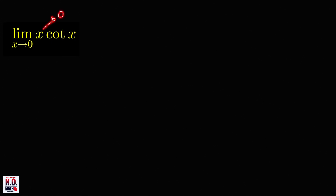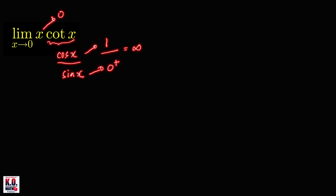Let's look at this first limit here. As x approaches 0, since cotangent x is equal to cosine x over sine x, then as x approaches 0 from the right, this will approach 0 from the right, this will approach 1, so 1 over 0 from the right will approach infinity. That is, when x approaches 0 from the right, cotangent x will approach positive infinity.